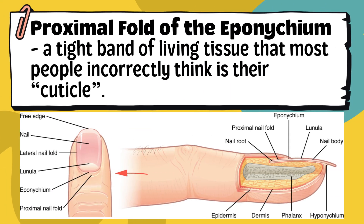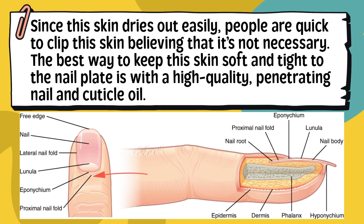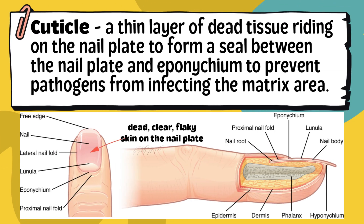Fifth, the proximal fold of the eponychium is a tight band of living tissue that most people incorrectly think is their cuticle. It refers to the fold or ridge of skin at the base of the nail plate. Since this skin dries out easily, people are quick to clip it, but the best way to keep it soft and tight to the nail plate is with a high-quality, penetrating nail and cuticle oil. Sixth, the cuticle is a thin layer of dead tissue riding on the nail plate to form a seal, preventing pathogens from infecting the matrix area. This transparent skin — called the true cuticle — is gently scraped off or removed during a manicure.